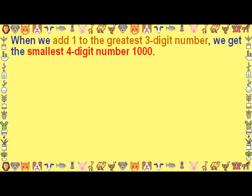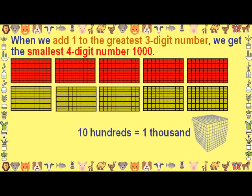When we add 1 to the greatest 3-digit number, we get the smallest 4-digit number 1000. 10 hundreds is equal to 1000.